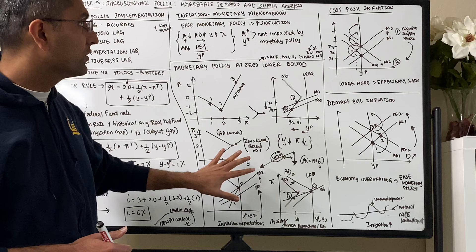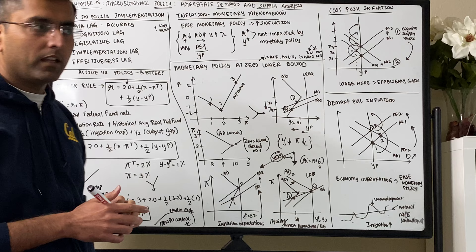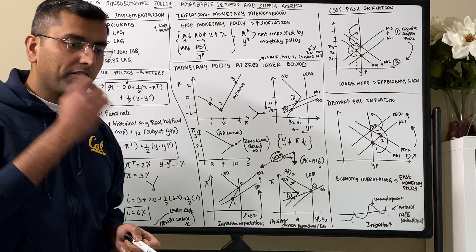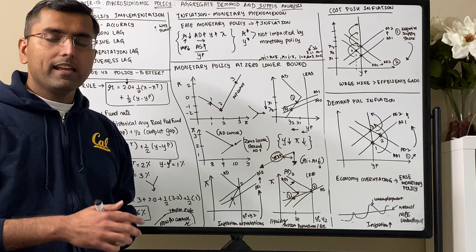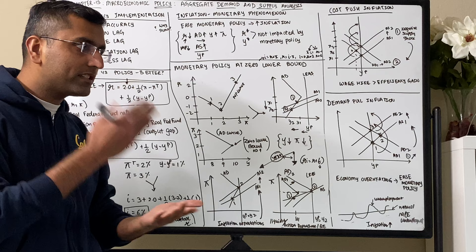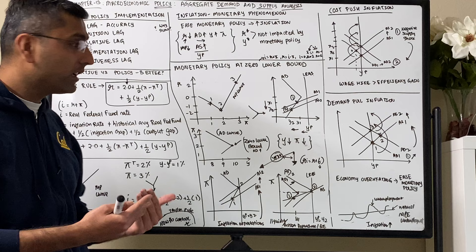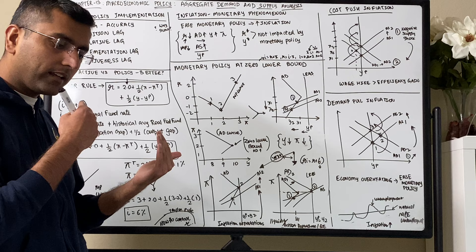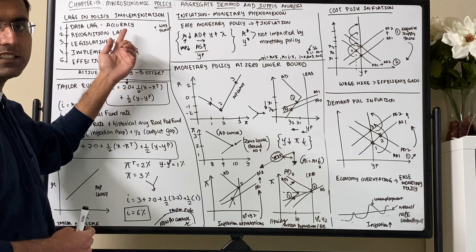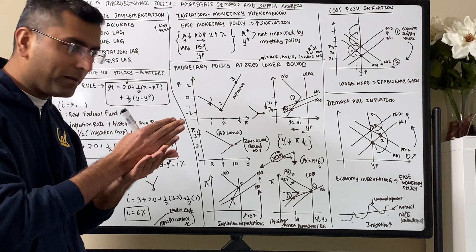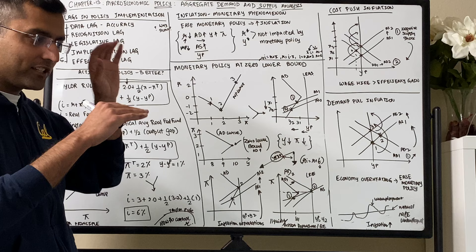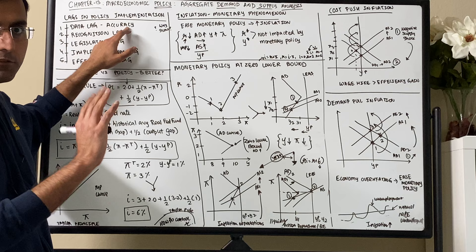Let's look at some examples of lags in the system. When policymakers — the Federal Reserve or government — decide on fiscal stimulus or monetary policy changes, it takes time. There is a data lag: just capturing unemployment data requires a survey that takes months to come out. There's also CPI and many other calculations involved, and accuracy of that data is also an issue. You can't really say with high accuracy what the unemployment rate is at any given moment.